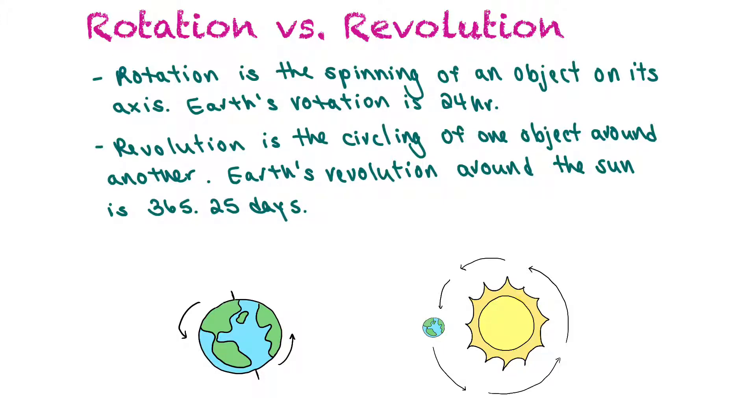Rotation is the spinning of an object on its axis. Earth's rotation is 24 hours. Revolution is the circling of one object around another, and Earth's revolution around the Sun is 365 and a quarter days.